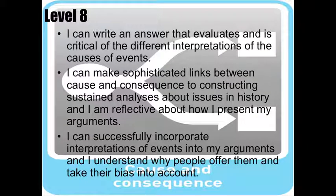At level eight, students can write answers that evaluate and is critical of the different interpretations of causes of events. So linking to the idea of reliability when we're talking about the PEAR extended written model. Students can make sophisticated links between the cause and consequence to construct sustained analysis about issues in history. Students can successfully incorporate interpretations of events into arguments and understand why people offer them and take their bias into account.